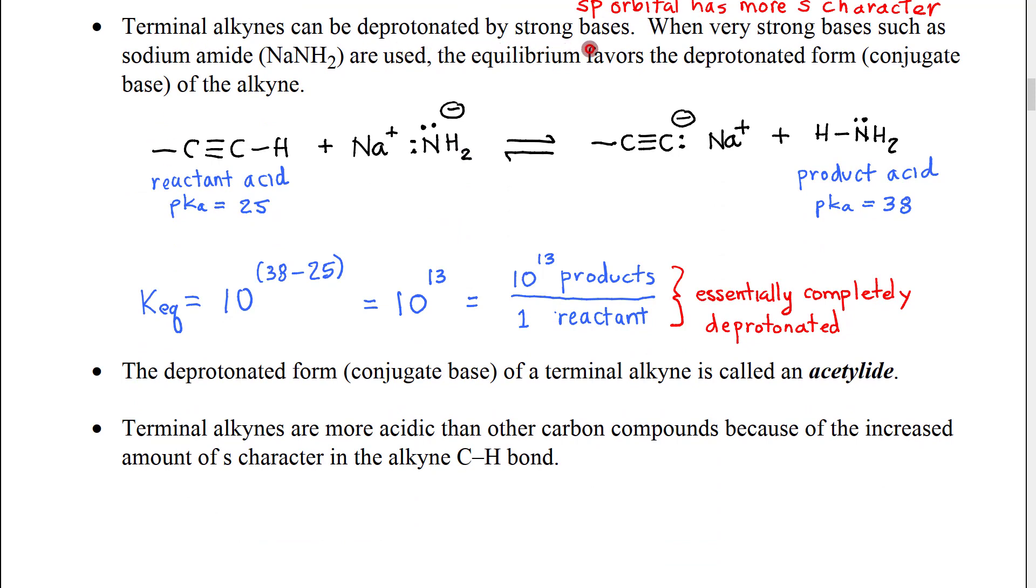As a result, terminal alkynes can be deprotonated by strong bases. So for example, when we use a very strong base, such as this base,